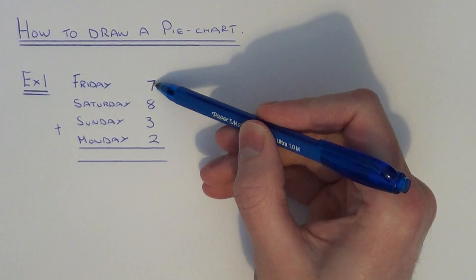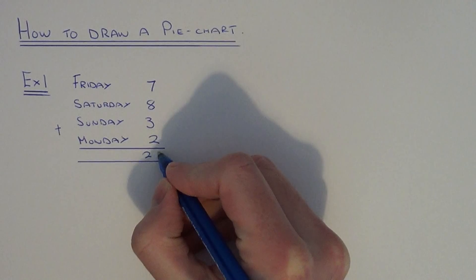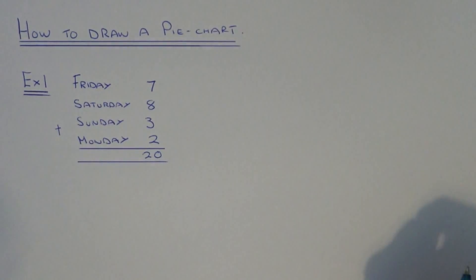So we have 8, 15, 16, 17, 18, 19, 20. So all together we have 20 people in the survey.